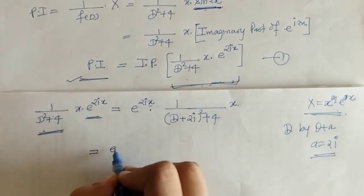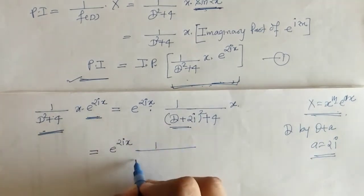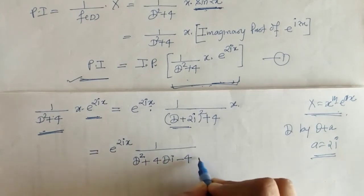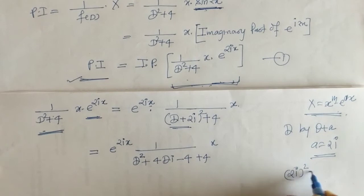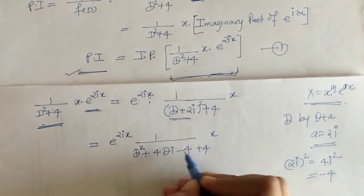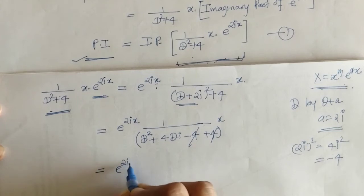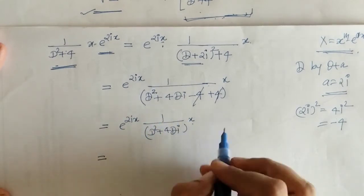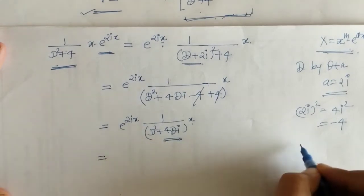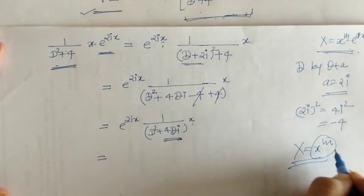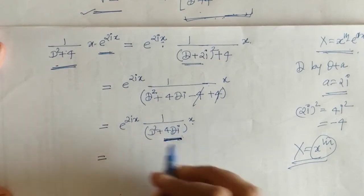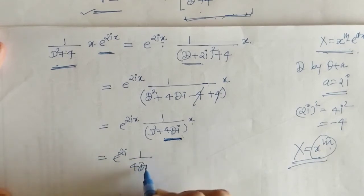Now we do the simplification. We expand: (D + 2i)² gives D² + 4Di + 4i² = D² + 4Di − 4. Since 4i² = −4, this cancels the +4 in the denominator, leaving 4Di. Now we need to operate 1 upon f(D) on x, so we express f(D) as 1 plus φ(D) by taking the lowest degree term outside.